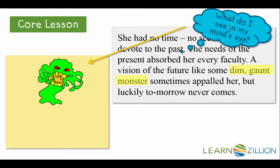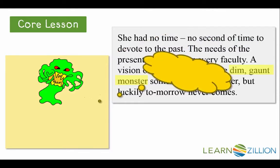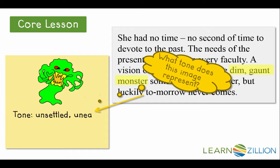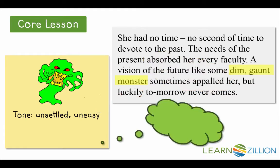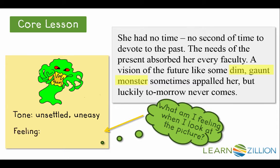I can picture a gaunt or skinny monster that looks scary. Next, I look at my image and ask myself, what tone does this image represent? Well, monsters are not usually very pleasant, and this monster creates an unsettled, uneasy tone in the story. I'll write this on my sticky note. Next, I ask myself, what am I feeling when I look at this picture? When I look at the picture I drew, I feel nervous and a little scared. I think this because I don't like monsters — they are scary to me. I'm going to jot this down on my sticky note.